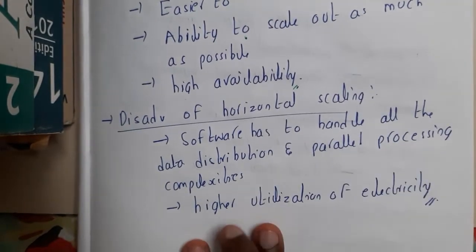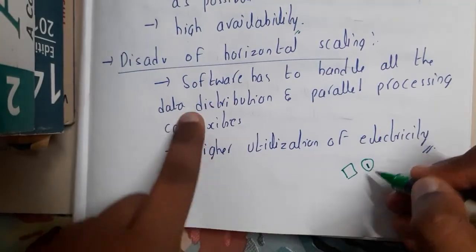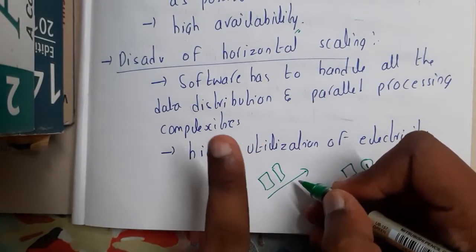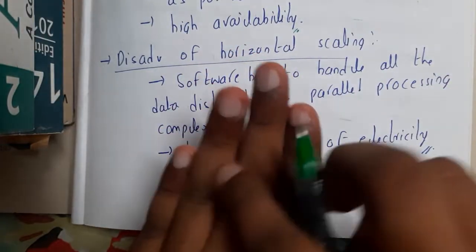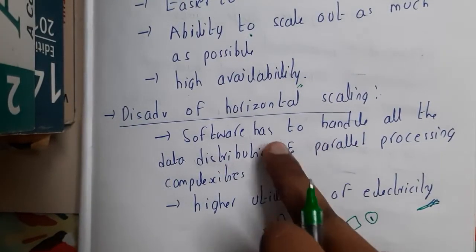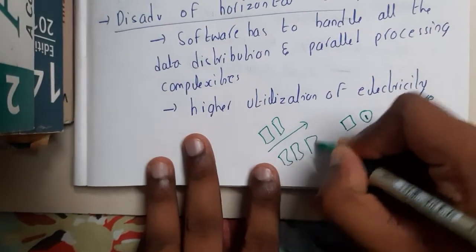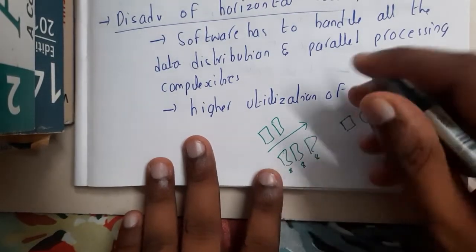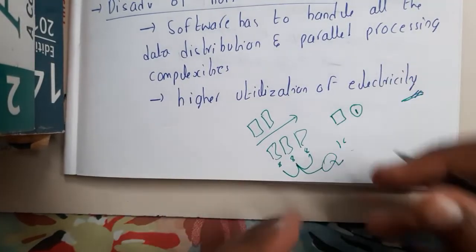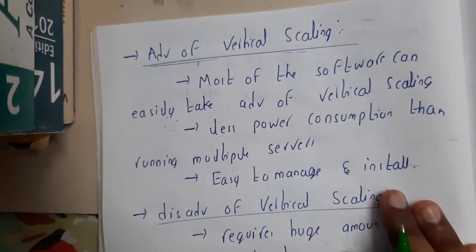The disadvantages of horizontal scaling include high electricity usage. As you add more systems, power consumption increases and the electricity bill rises. Another disadvantage is software complexity: since data is distributed across multiple systems — say 8 GB here, 8 GB there — any large process must be divided equally among them, the results combined, which adds significant complexity.